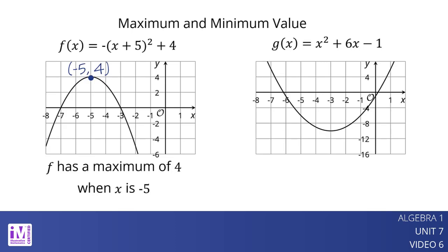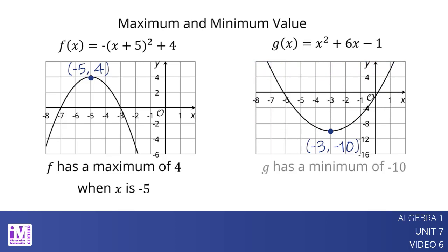The vertex of the graph of g is at (-3, -10), and the graph is a u-shape that opens upward. No other points on the graph are lower than (-3, -10). So we can say that g has a minimum of negative 10, and that this occurs when x is negative 3.